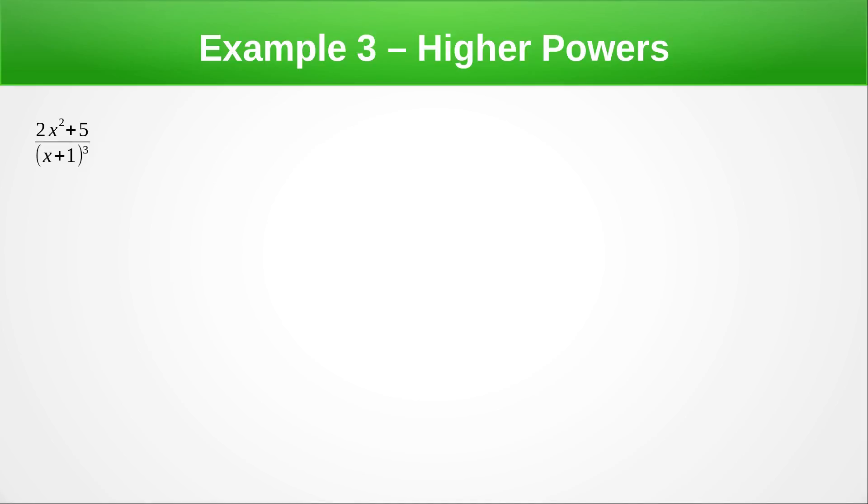Okay so for our last example we're going to look at a denominator with factors raised to a power and if you remember we need this power, the power one less and the power below that one as well. They're all just constants here because this is linear so just like all the others we're going to multiply by (x + 1)³.